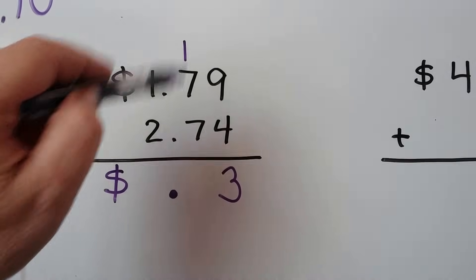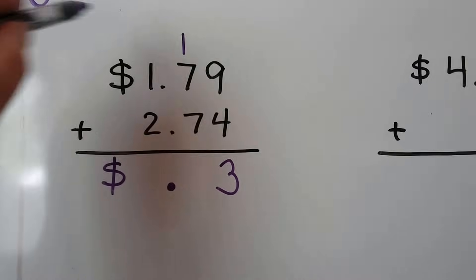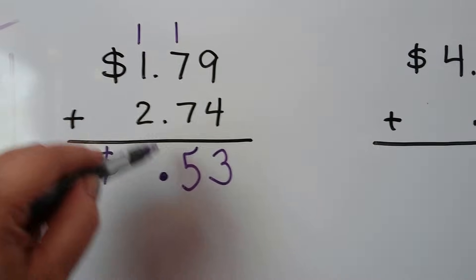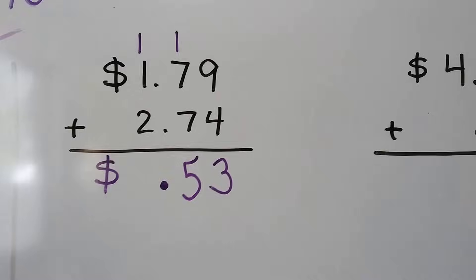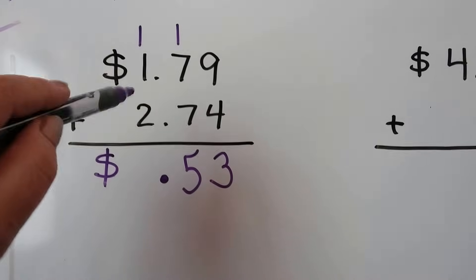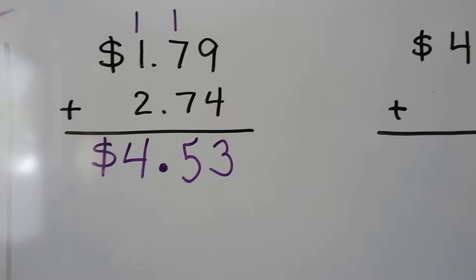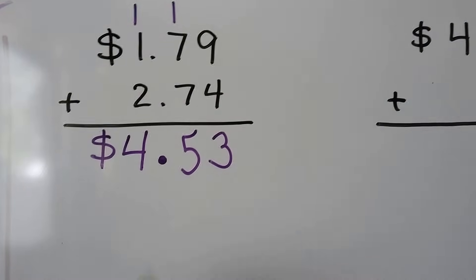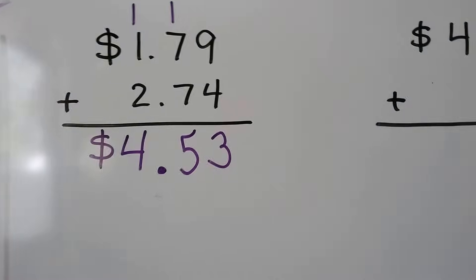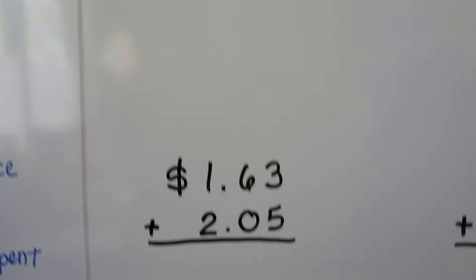Now we add the 7 plus 7 — that's a nice double to add. That's 14 plus 1 more is 15, and we just regroup just like we would do with hundreds. It goes up into the dollars. We add the dollars and we have 2, 3, 4. We have 4 dollars and 53 cents. We just have to remember our dollar sign and our decimal point.